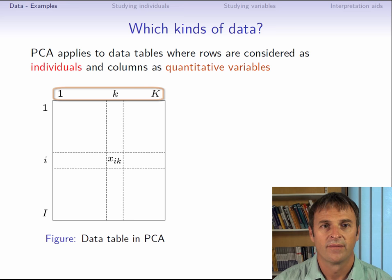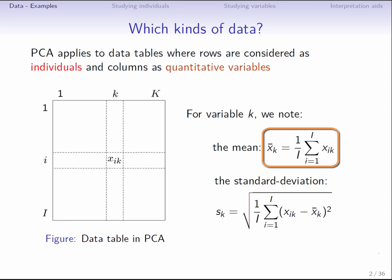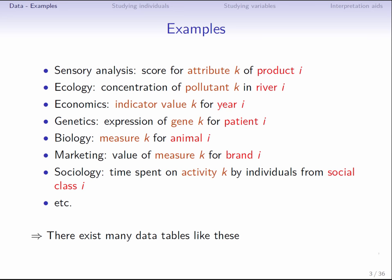x̄_k is the mean of variable k calculated over all individuals, and s_k the standard deviation of the sample for variable k. Here, we use 1 over I, which means that the standard deviation is calculated on the data, and we don't try to estimate the standard deviation of the population. Data tables with individuals in rows and variables in columns can be found in many different areas, which means that we can perform PCA on quite a diverse range of data sets.